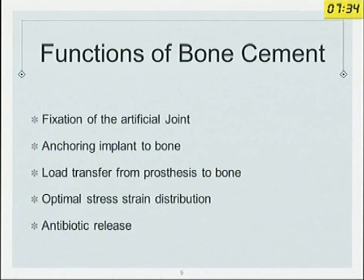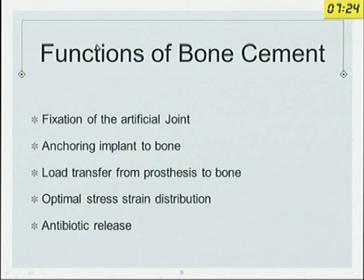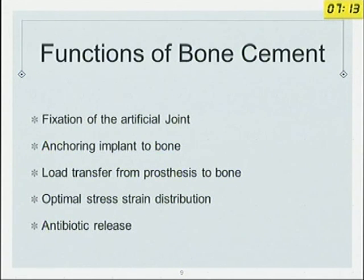Cement is essentially used to fix the artificial joint. Fixation is a misnomer — it acts as a grout, fills up the spaces, and stabilizes the prosthesis. Anchoring the implant to bone is a better term. It transfers load from prosthesis to the bone and thus optimizes stress-strain distribution.